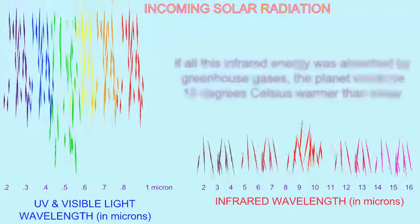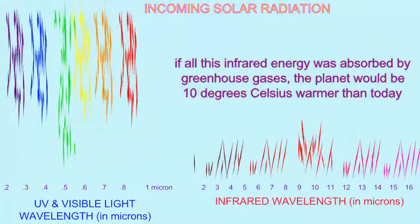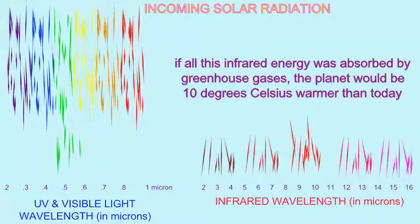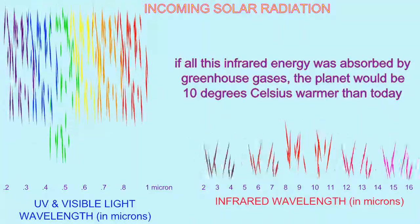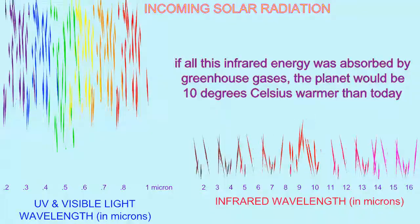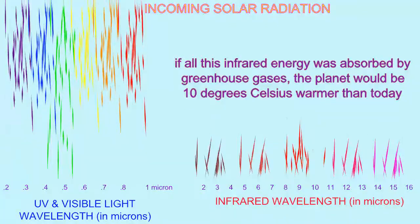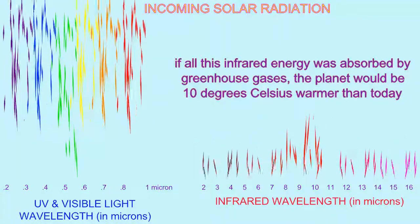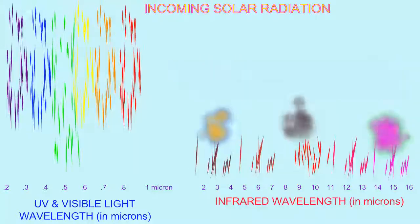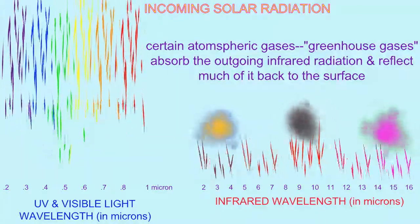If, on the other hand, all of this heat were retained, the planet would be 10 degrees warmer than it currently is, 10 degrees Celsius, a temperature which has not been reached in the past millions of years.